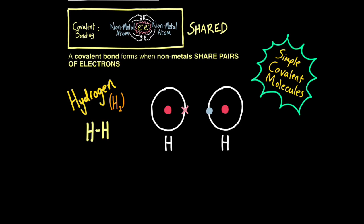Let's start off by looking at simple covalent molecules and how they covalently bond. There are six examples you need to know for the exam. First, let's look at how hydrogen atoms bond covalently to form a hydrogen molecule, H2. Hydrogen has an atomic number of one, meaning it has one proton in its nucleus and one electron in its shell. The first shell is complete with two electrons. When you draw covalent bond diagrams, you must use dot and cross diagrams.